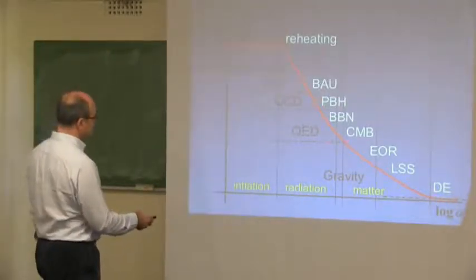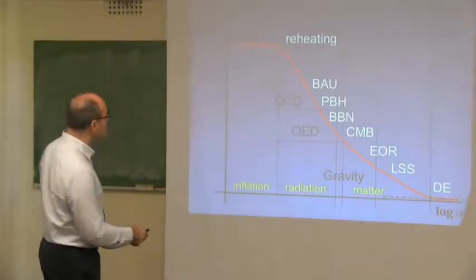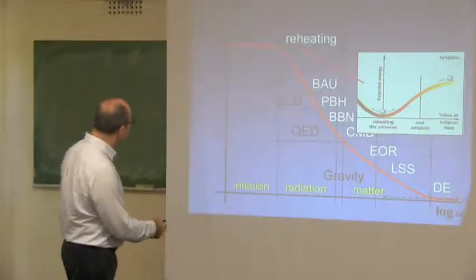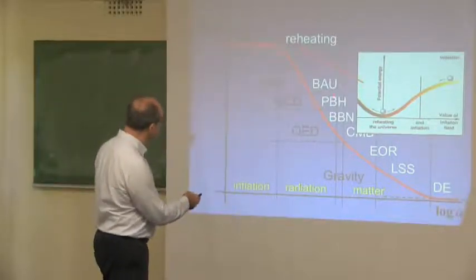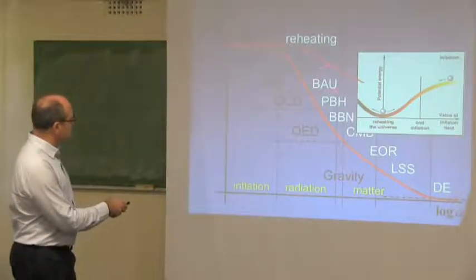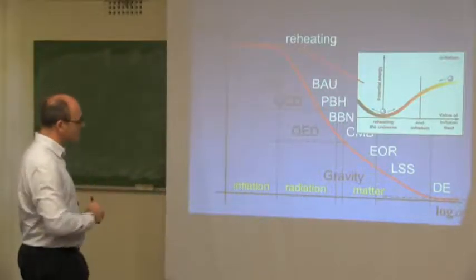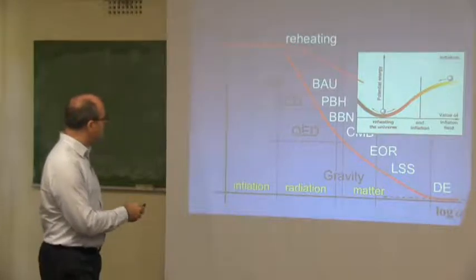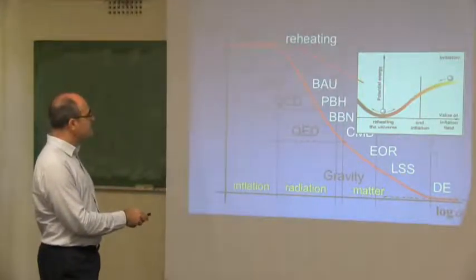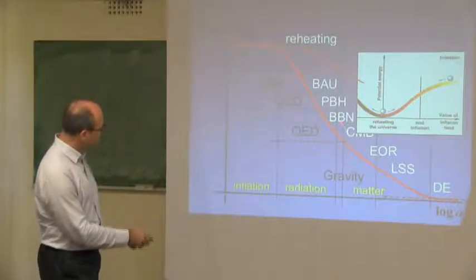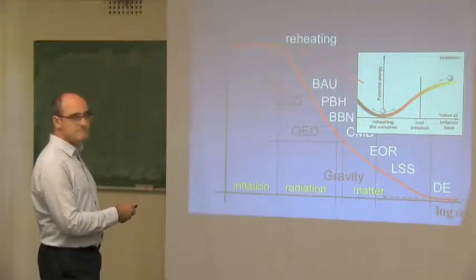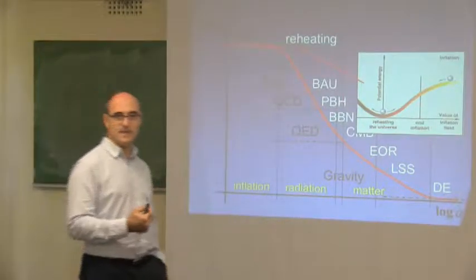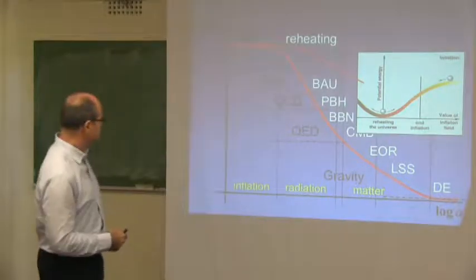In order to produce baryons — the nuclei we observe — we need some mechanism at this scale that would be responsible for this asymmetry. And I will describe within this lecture how in the epoch of reheating, if inflation indeed gave rise to all of this extremely rich phenomenology, perhaps at this epoch we have the right conditions to produce the baryons and nuclear fuels.